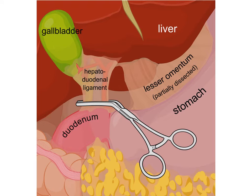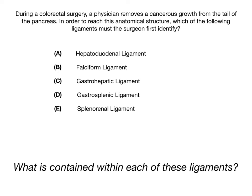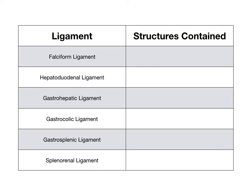Looking at the list, there are actually six ligaments that you need to memorize. Because this is so high yield, I've generated a question for this video question bank series. The question you should be asking yourself is what is contained within each of these ligaments? On the left side you see the six different ligaments, and on the right side we will fill in the structures contained within each.